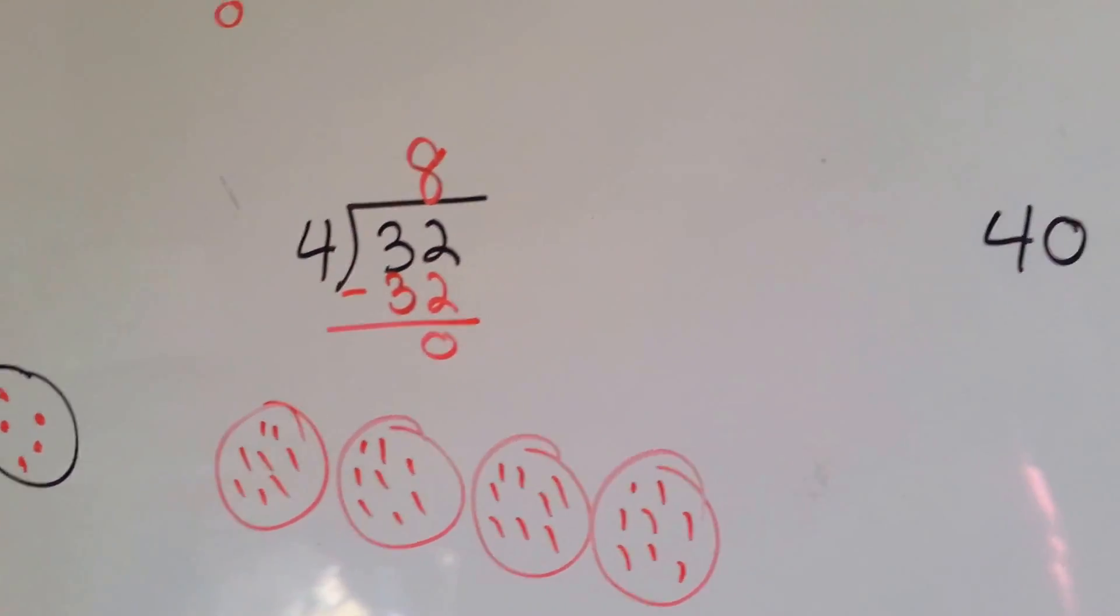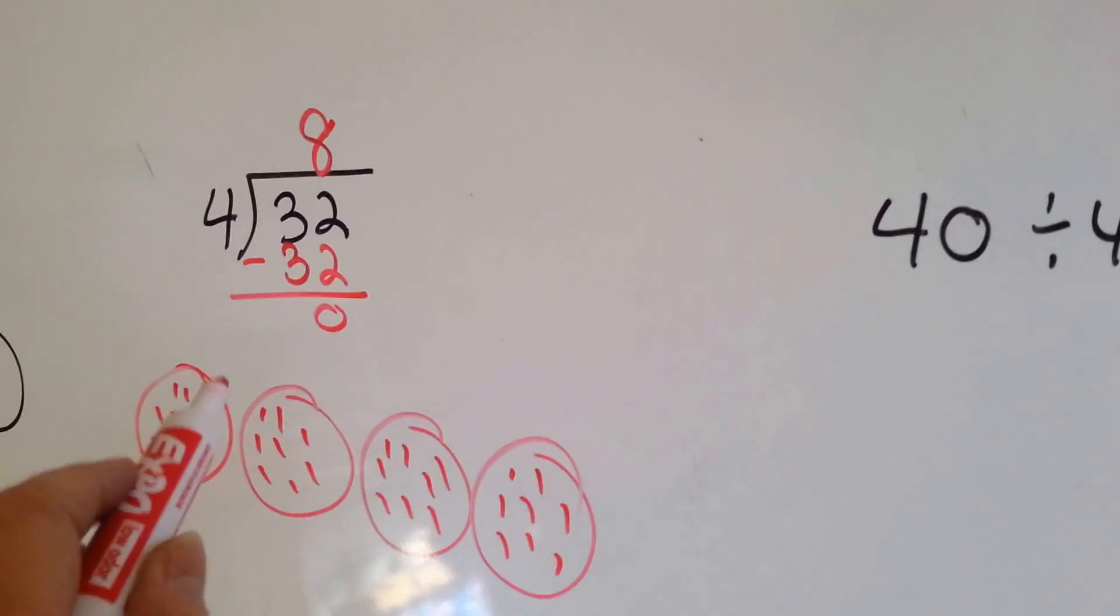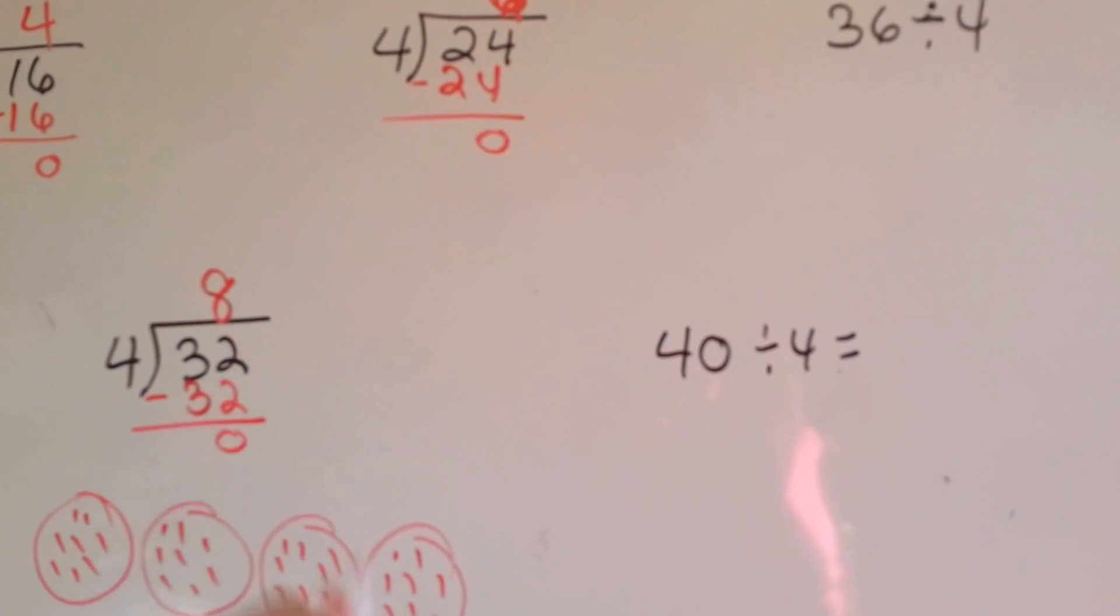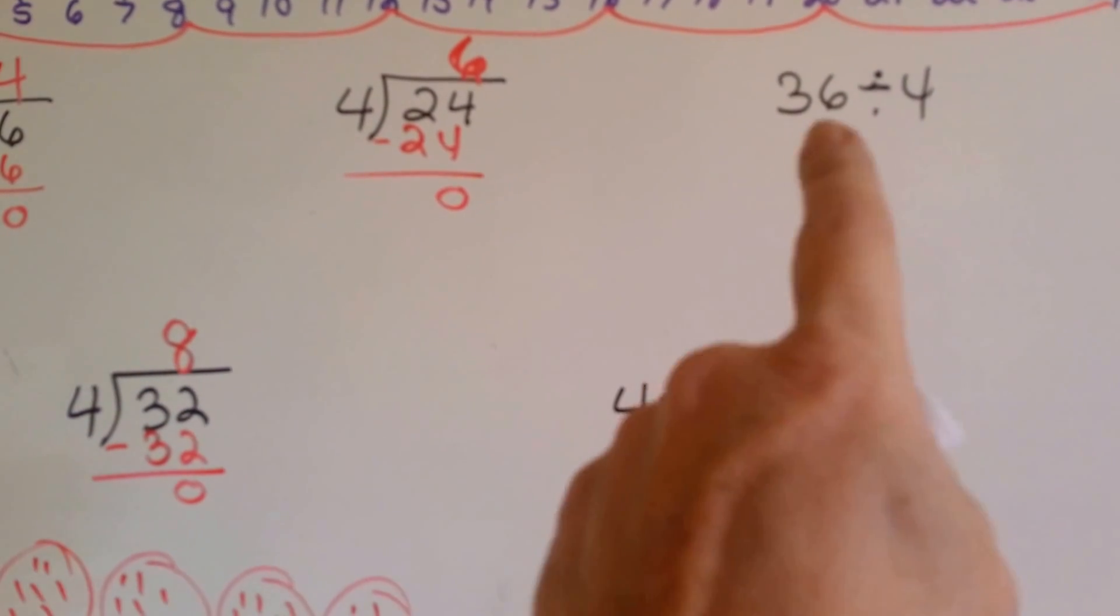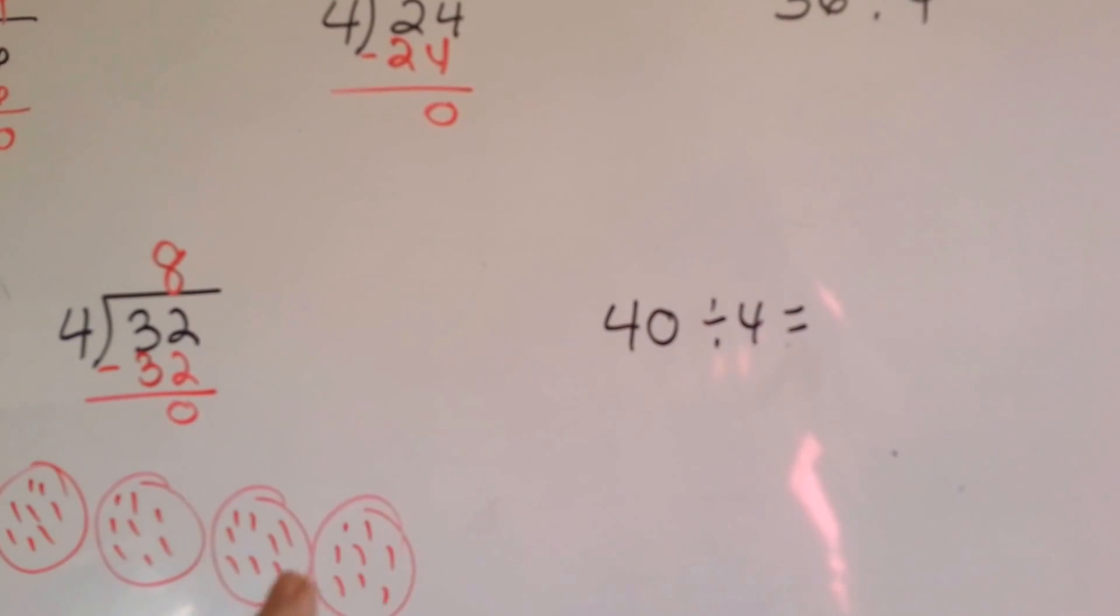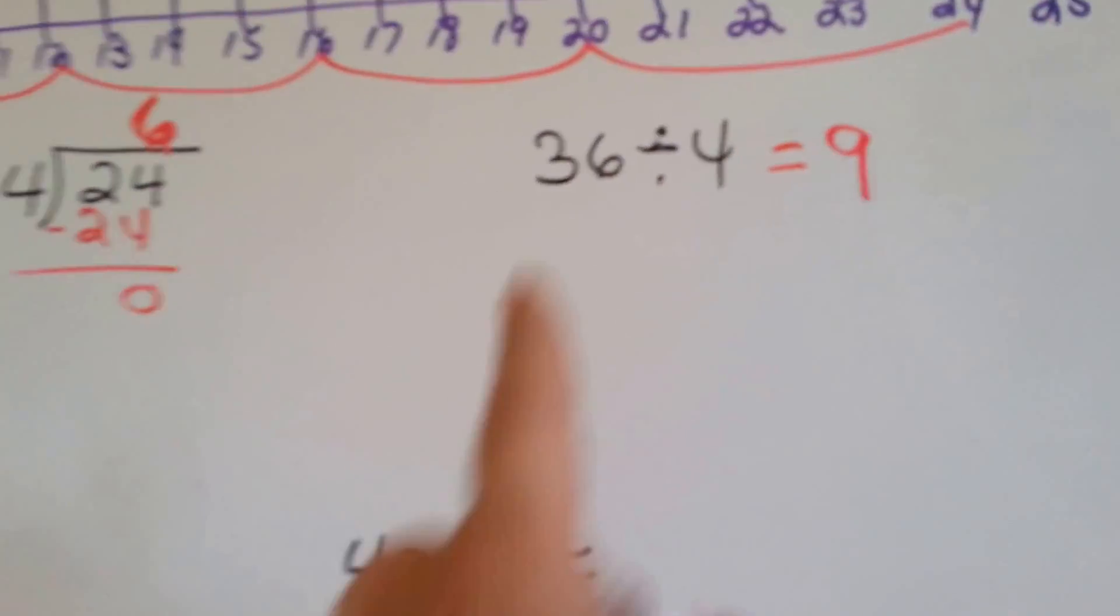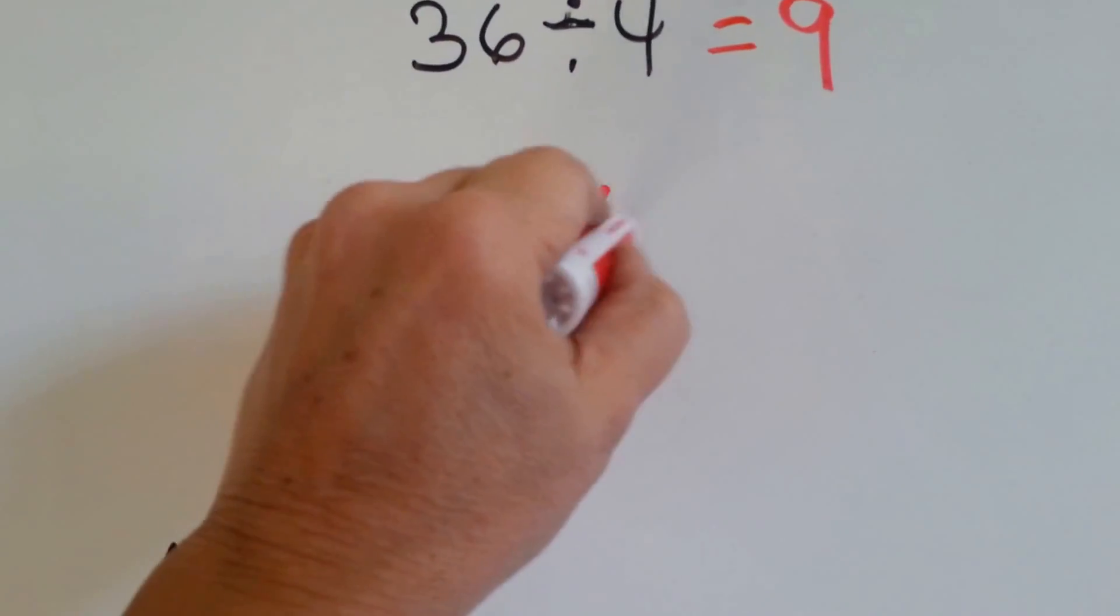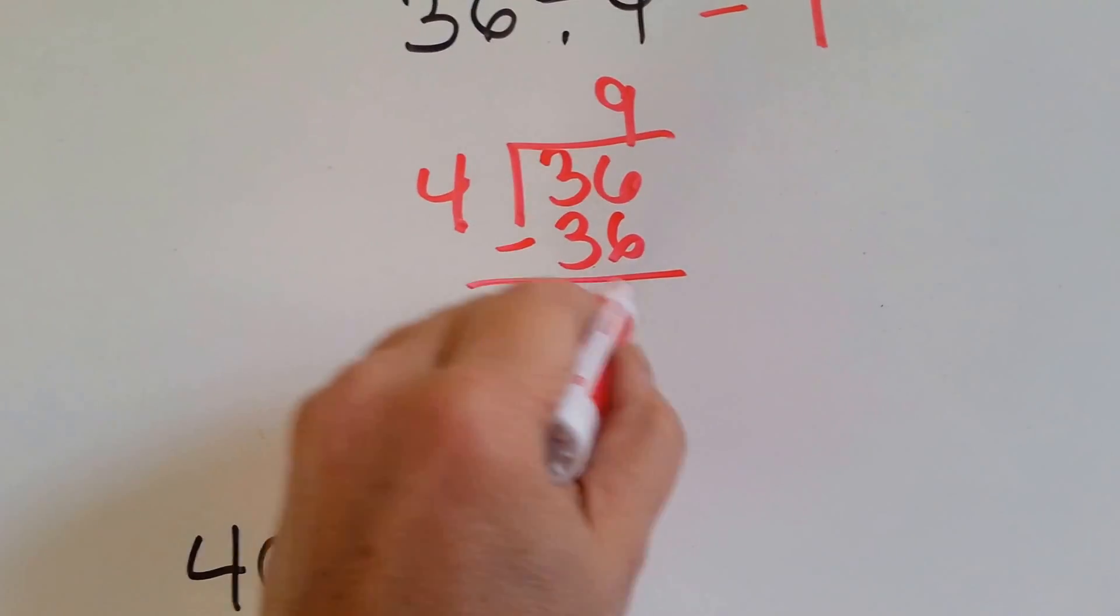4 goes into 32 8 times. How many times can 4 go into 36? Well, if it went into 32 8 times, how many times would it fit into 36? How many more is 36 than 32? Let's count. 32, 33, 34, 35, 36. It's 4 more. So 1 more 4 fit into here. If you put 1 more into each of these groups instead of 8, you'd have 9. So 36 divided by 4 equals 9. Because that's 4 more, we added 1 more 4. We had 8 4s, now we have 9 4s. To finish it, we go 4 times 9 is 36, we do our subtraction and get 0.